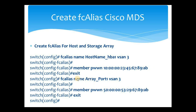Next, we create another FC alias using the same command, this time giving the FC alias name 'array_port1' — this is the FC alias for the storage array front-end port. The command 'fcalias name array_port1 vsan 3' creates the FC alias and takes us to FC alias config mode. Inside, we add the member with 'member pwwn' followed by the WWPN of the front-end array port, then type 'exit' to come out of FC alias config mode.